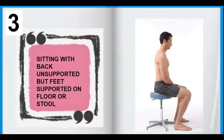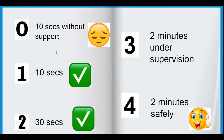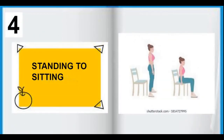The third task is sitting with back unsupported, but feet supported either on the floor or on a stool. If the patient cannot sit without back support for 10 seconds, we give a score of 0. If they can safely sit without supervision for 2 minutes, we give them the maximum score of 4.